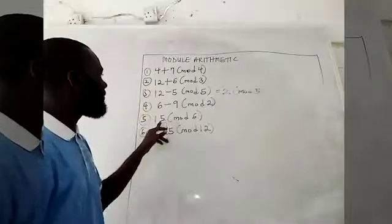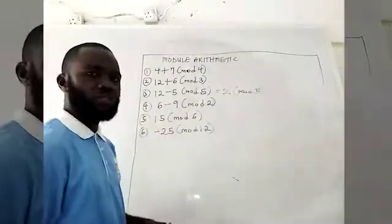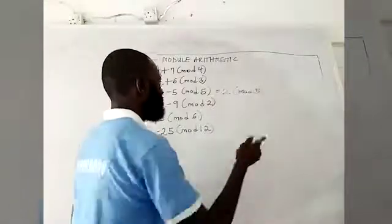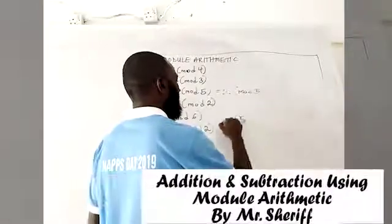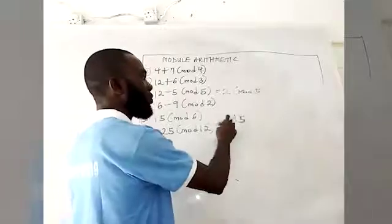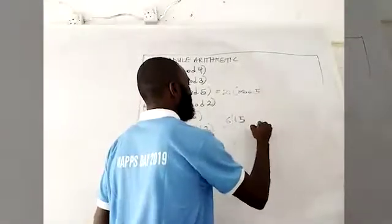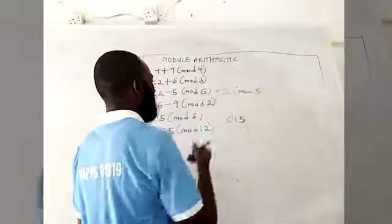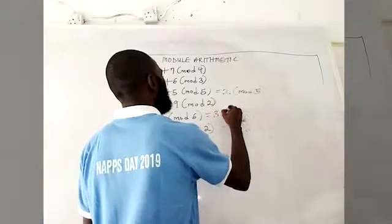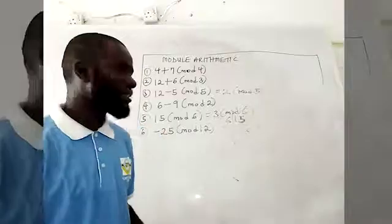For 15 in mod 6: 15 is not a number in mod 6, so I divide 15 by 6. How many groups of 6 fit in 15? That's 2, with remainder 3. So 15 in mod 6 equals 3.